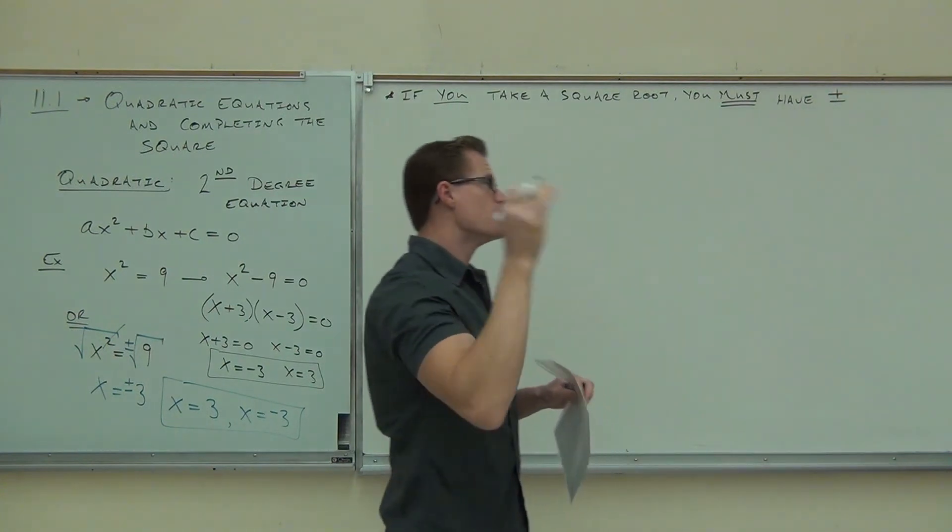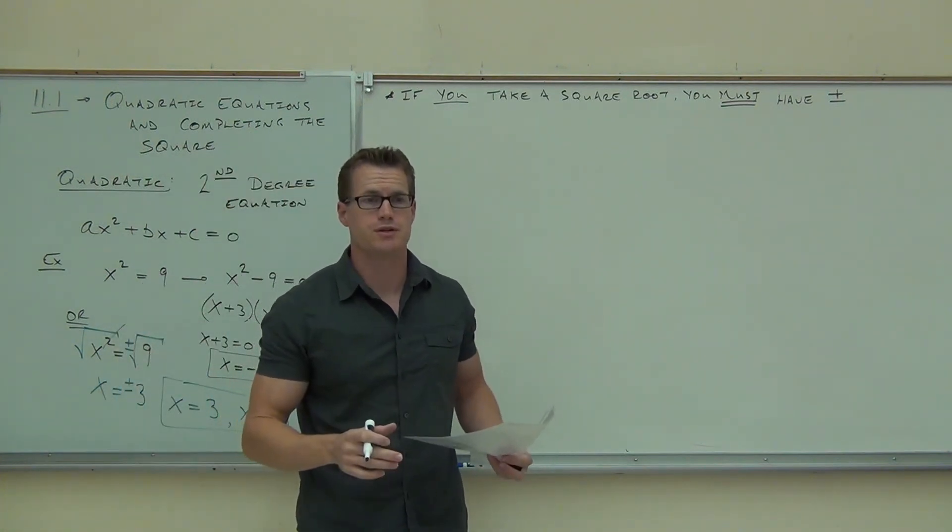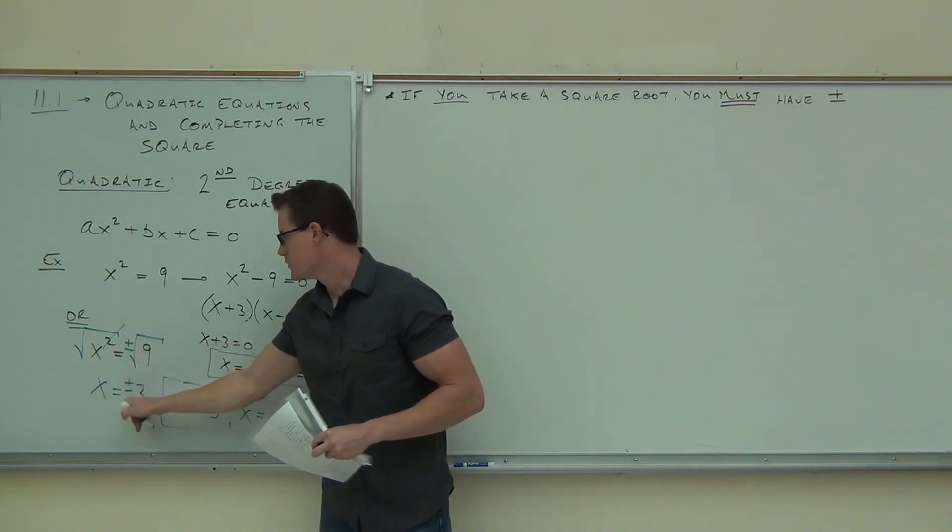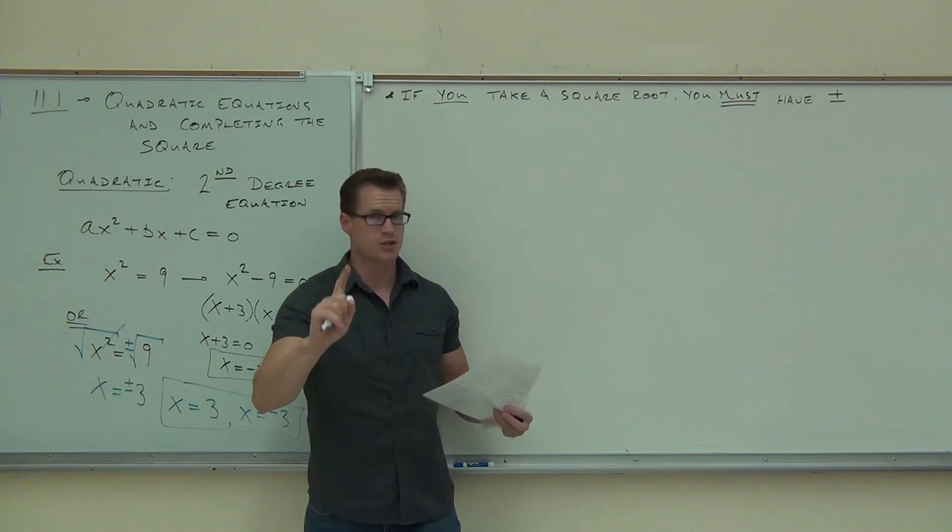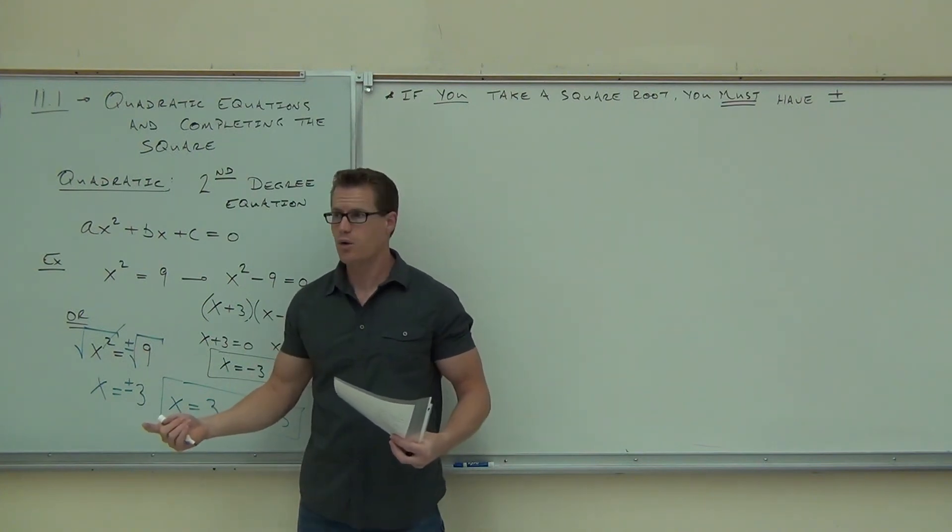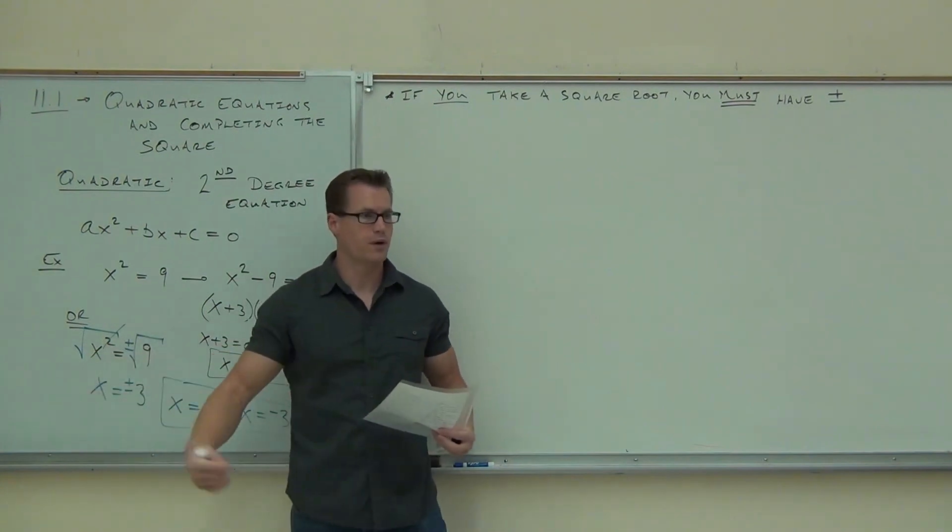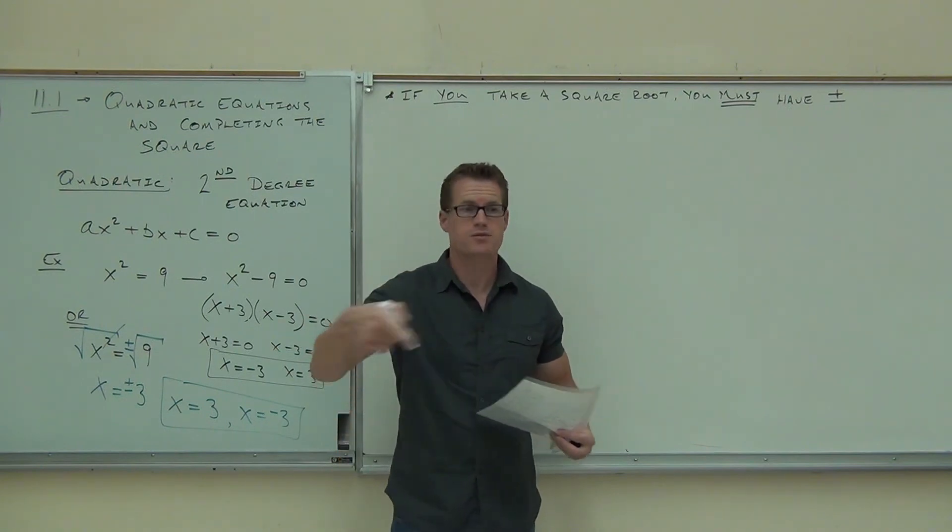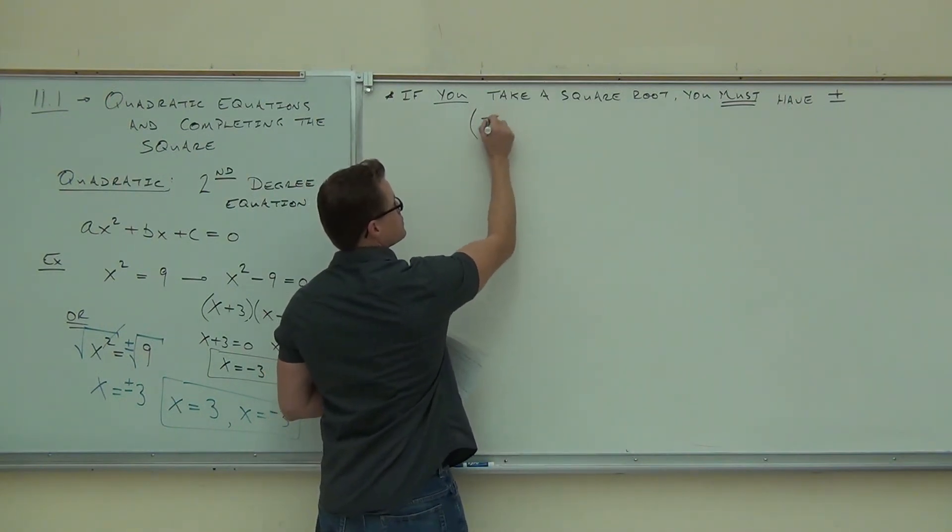If you take the square root, you must have plus minus. What this does, this gives you your two solutions. If you don't have it, let's ignore this again. If you ignored that, and you ignored that, you'd only get one solution. You'd get positive three. You wouldn't get negative three. Do you have the problem right? No. You don't even have it half right, really. You're missing the whole point. So, when you include the plus minus, you're going to get how many solutions? Two. One positive, one negative. So, you must have the plus minus. This is what gives you the two solutions.